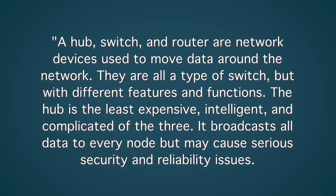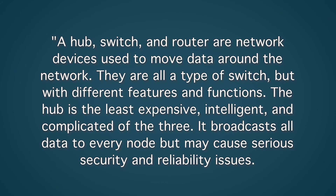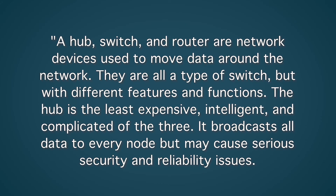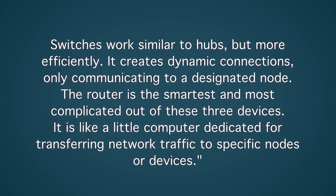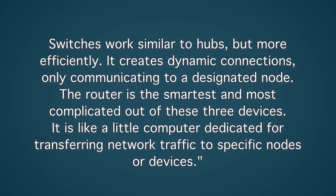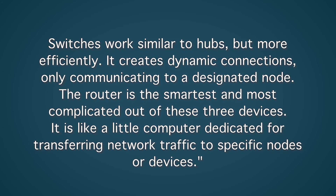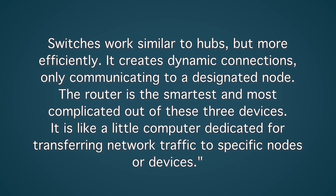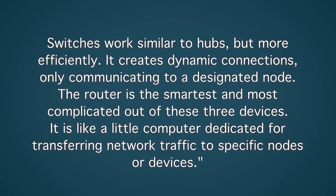The hub is the least expensive, intelligent, and complicated of the three. It broadcasts all data to every node but may cause serious security and reliability issues. Switches work similar to hubs but more efficiently — they create dynamic connections only communicating to a designated node. The router is the smartest and most complicated of these three devices. It is like a little computer dedicated for transferring network traffic to specific nodes or devices.